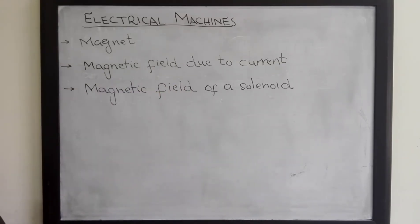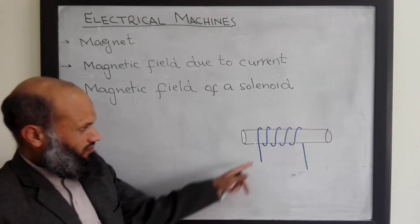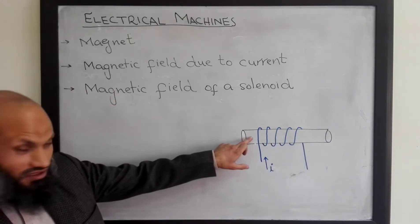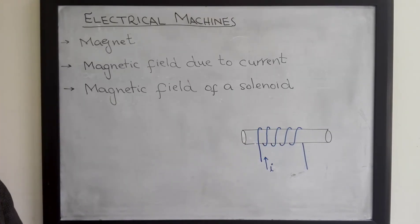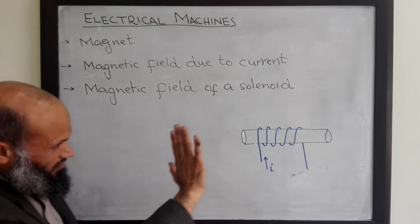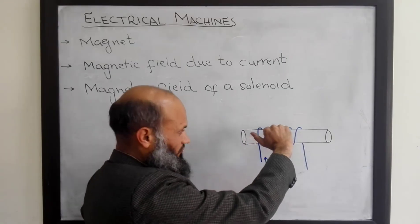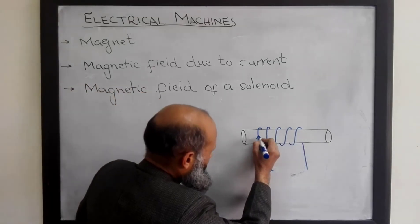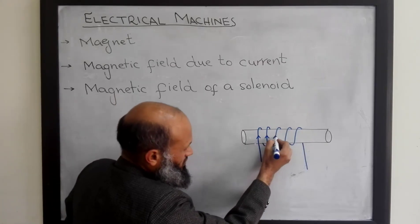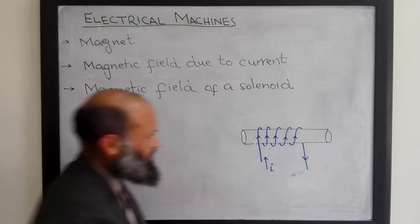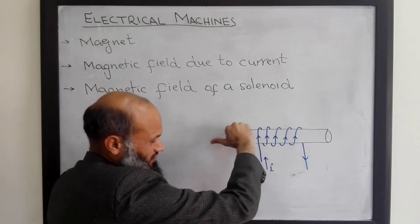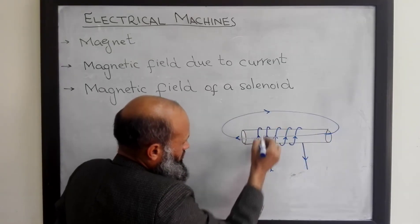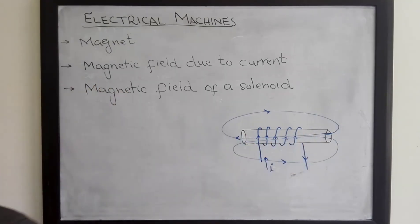Similarly, if we wrap a conductor around a magnetic material — that is, a conductor is wound on a magnetic material — and if we pass current through this conductor, the ferromagnetic material is magnetized. The direction of magnetic field can again be determined by the right-hand rule: if we curl the fingers in the direction of current, then the thumb will indicate the direction of the magnetic lines of flux. In this arrangement, the current passes through the conductors and the thumb points in the direction of the flux — one end becomes the north pole and the other the south pole.